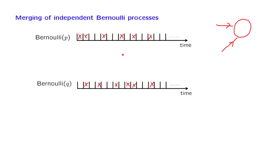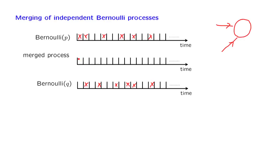What we mean by independence is that any collection of random variables associated with the first process will be independent from any collection of random variables associated with the second process. We now merge the two processes: whenever there's an arrival in any of the original processes, we record an arrival in the merged process, as in this picture. We do not distinguish between slots where there was an arrival in only one original process versus slots where there was an arrival in both. In both cases, there was an arrival in the merged process, so collisions — arrivals in both original processes — are counted as only one arrival in the merged process.